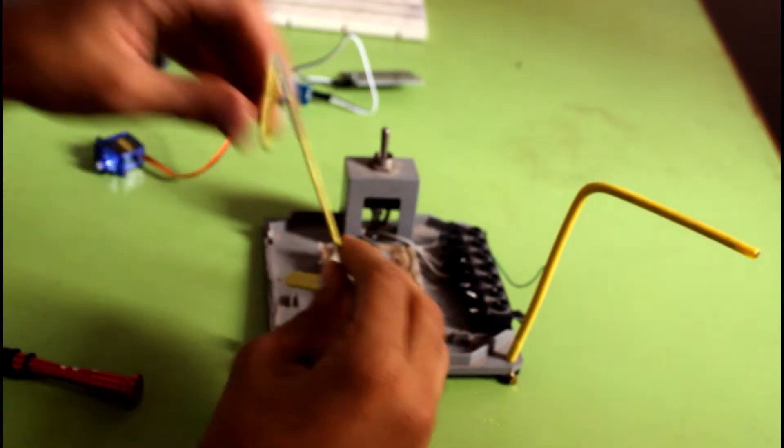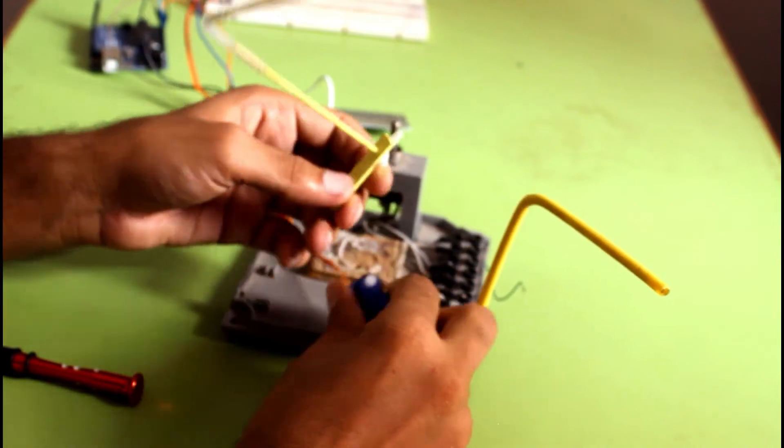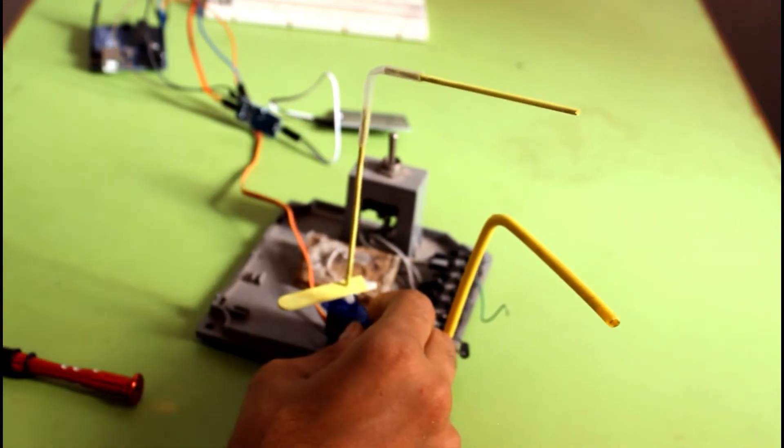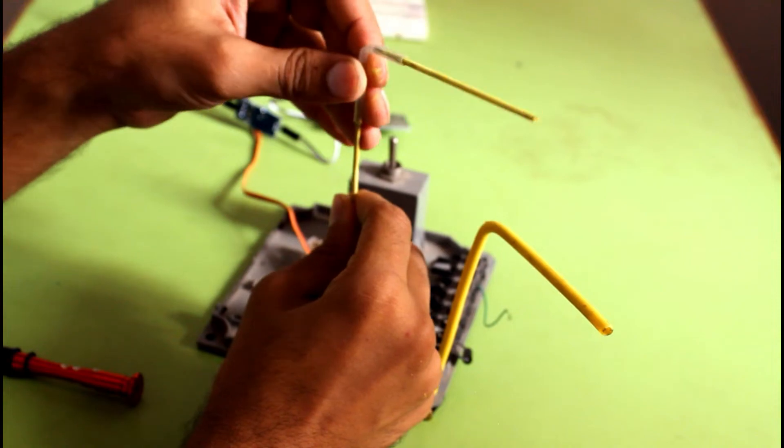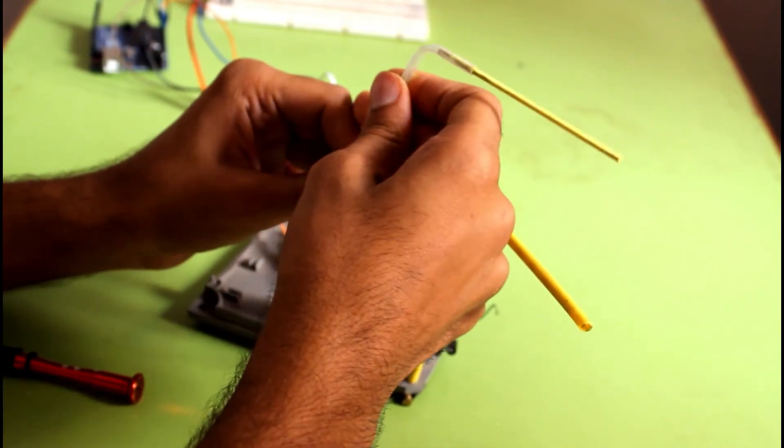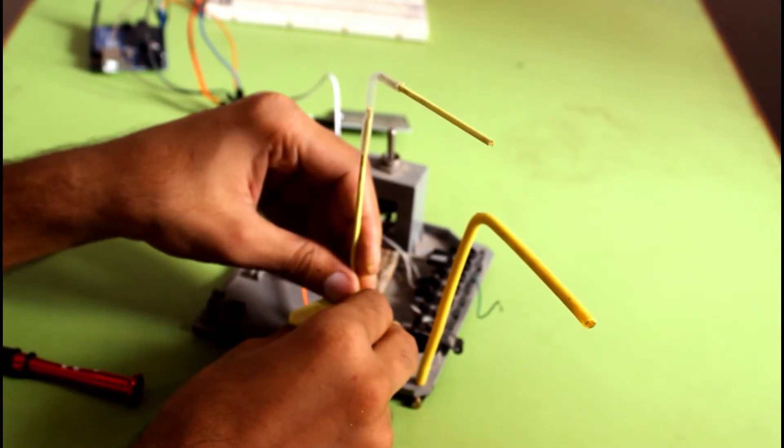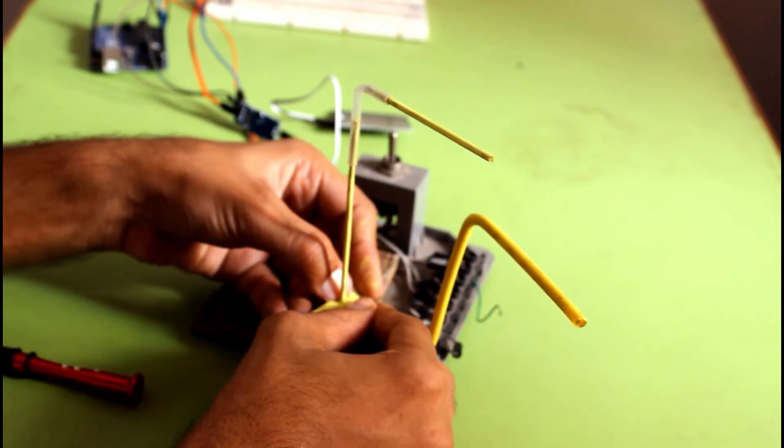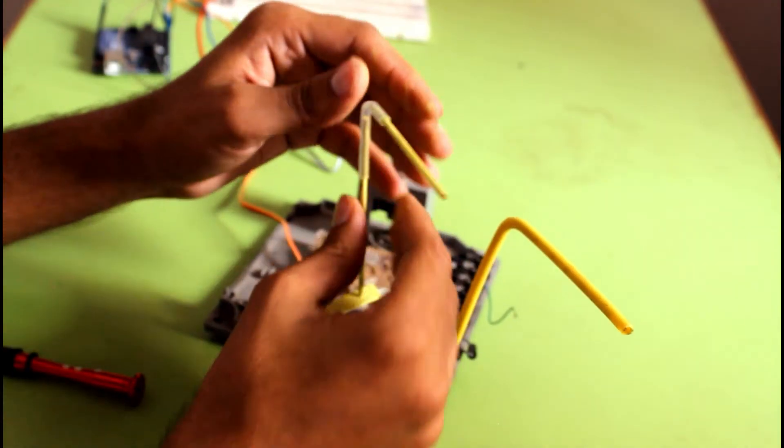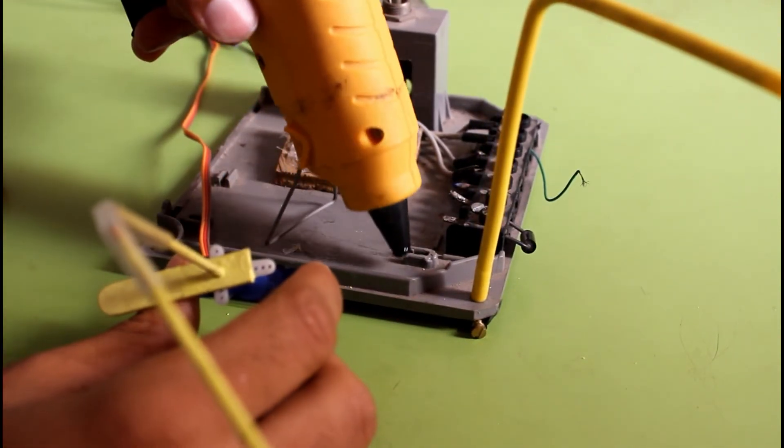Okay, now I'm going to put it on the servo motor. It needs some adjustment because the degrees of movement is quite important here and we don't need any error while working. Okay, now we will glue this servo motor on its place.